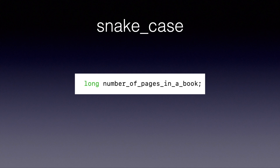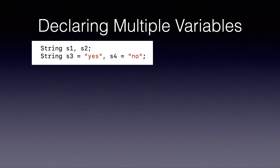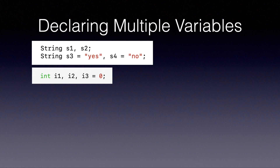Now let's look into the next topic: declaring multiple variables in the same line. In Java, we can declare and also initialize multiple variables in the same line. The variables need to be separated by a comma, and keep in mind that all variables should be of the same type. So in the first example, we have s1 and s2 — both are of type String, separated by a comma, so it's a valid statement. In the second line, we have s3 and s4 — again the same type, separated by a comma. In the next example, we are declaring three variables i1, i2, and i3, but we are only initializing the third variable, so i1 and i2 are not initialized.